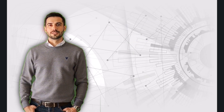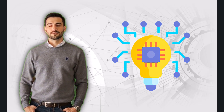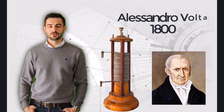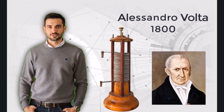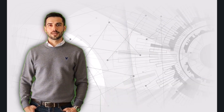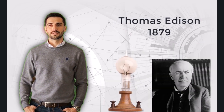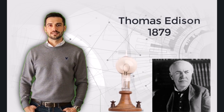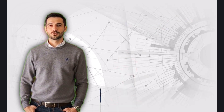Following this discovery, experiments related to electricity gained momentum. At the start of the 19th century, Alessandro Volta invented the battery, and in 1831, Michael Faraday developed the electric generator. By 1879, Thomas Edison invented the electric lamp, marking the beginning of the practical use of electricity in daily life.